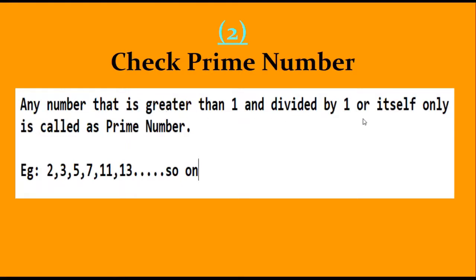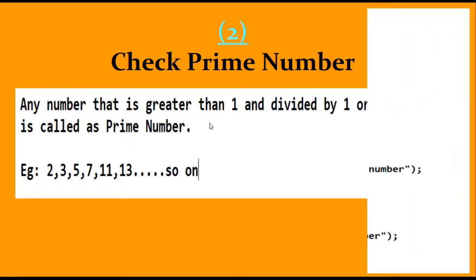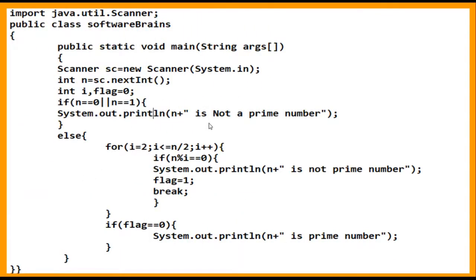A prime number is a number greater than 1 that is divisible only by 1 or itself, meaning it has exactly two factors. If it has multiple factors, it is not a prime number. Examples of prime numbers are 2, 3, 5, 7, 11, 13, and so on. Note that 2 is the only even prime number.